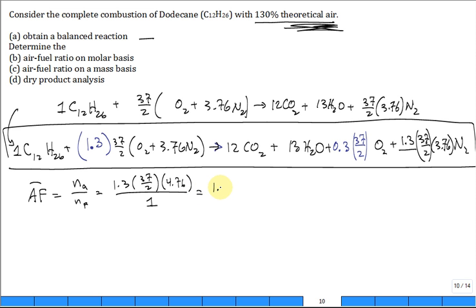You know what? This looks like 1.3 times the air to fuel from the previous problem when it was stoichiometric, when it was 100% theoretical air. And it is exactly that. It's exactly that. And so this is 1.3 times 88.06, which gives us a whopping air to fuel on a molar basis of 114.5.